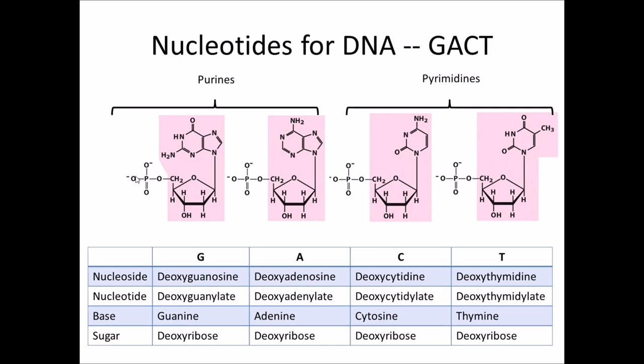In DNA, the sugar is deoxyribose. In RNA, we'll see that it's ribose. In DNA, it's missing an oxygen here on the two prime position.